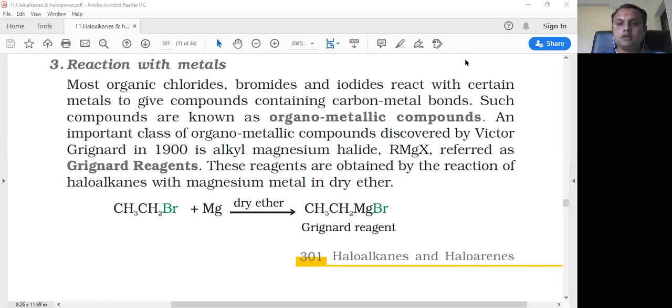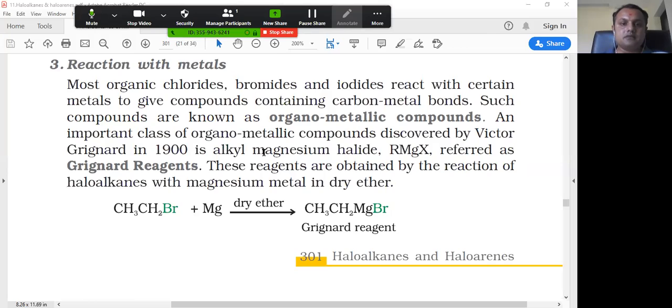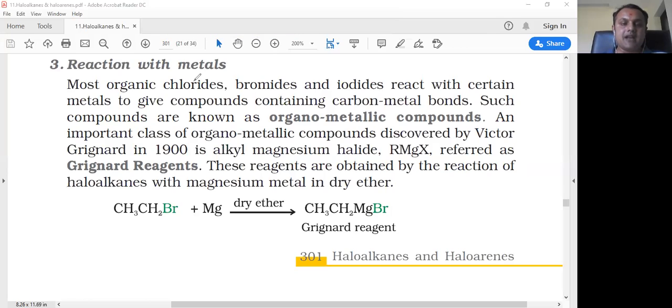Today we are going to learn about Grignard reaction. Grignard reagent means RMgX. Most organic chlorides, bromides, and iodides react with certain metals to give compounds containing carbon-metal bonds.